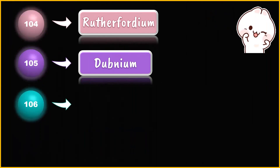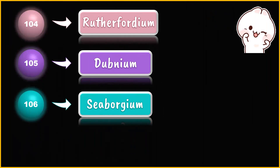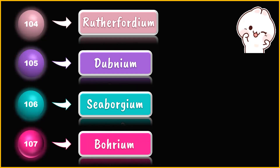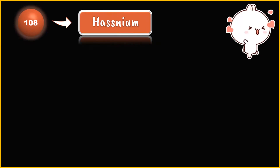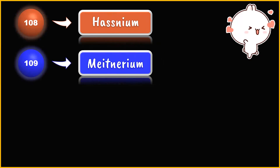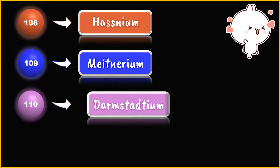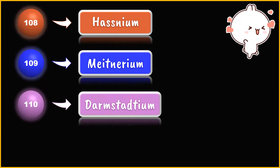Please read the name of the elements along with me. If you repeat four to five times, then you can be familiar with these names. 106 — Seaborgium. Seaborgium. 107 — Bohrium. Bohrium. 108 — Hassium. Hassium. Please repeat. 109 — Meitnerium. Meitnerium. 110 — Darmstadtium. Darmstadtium.